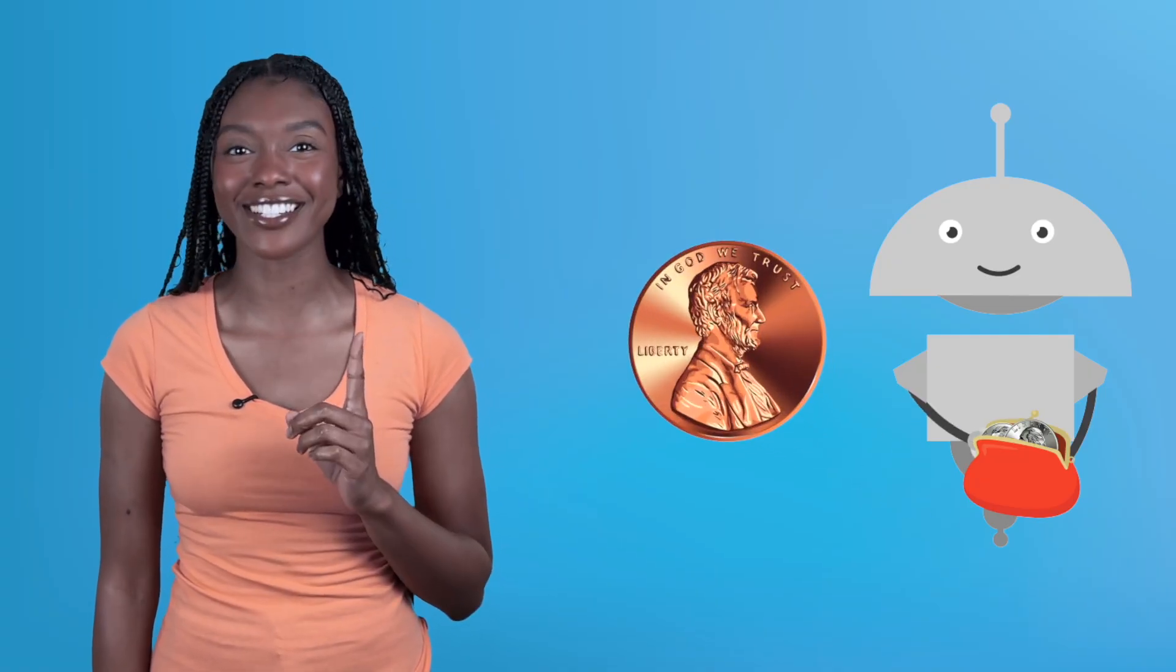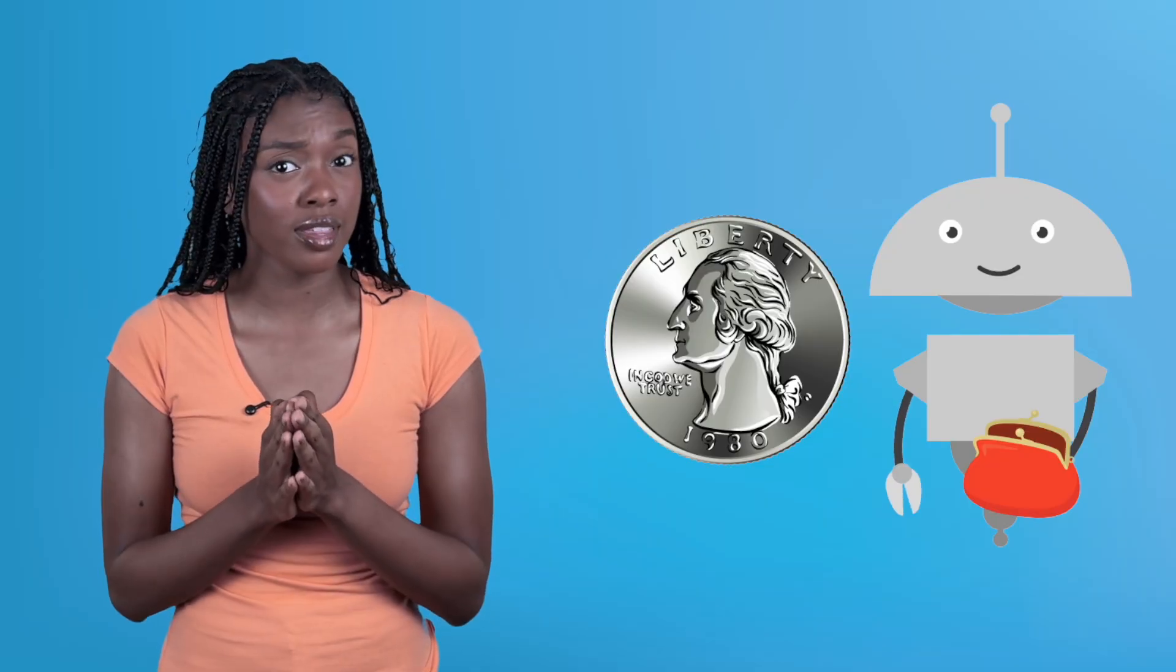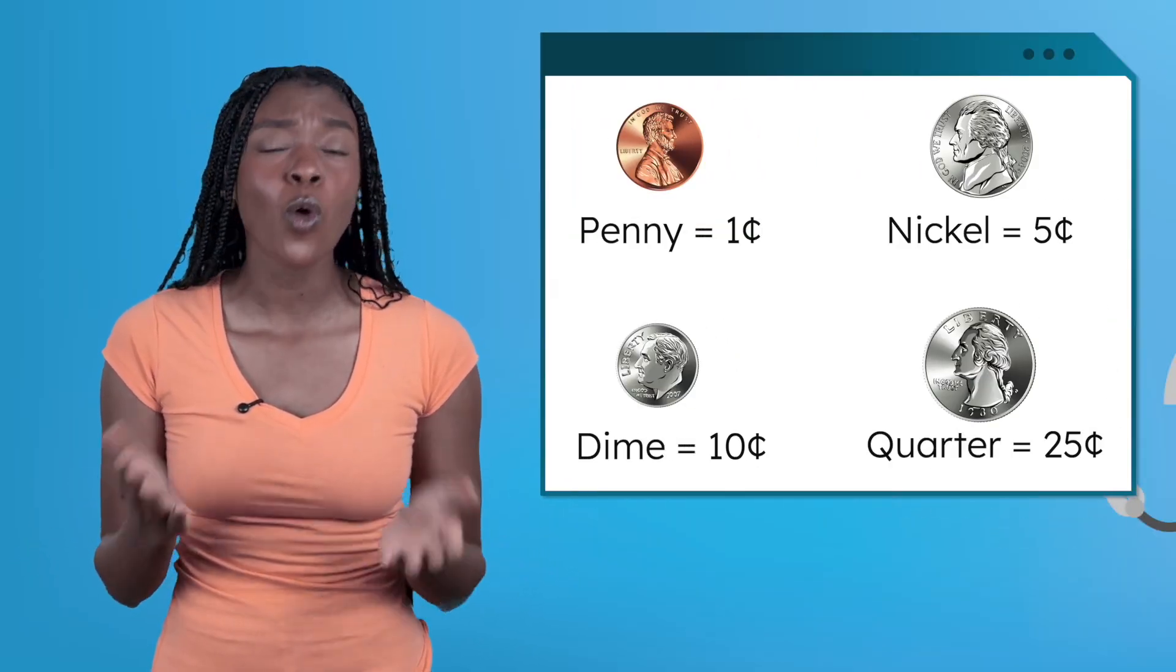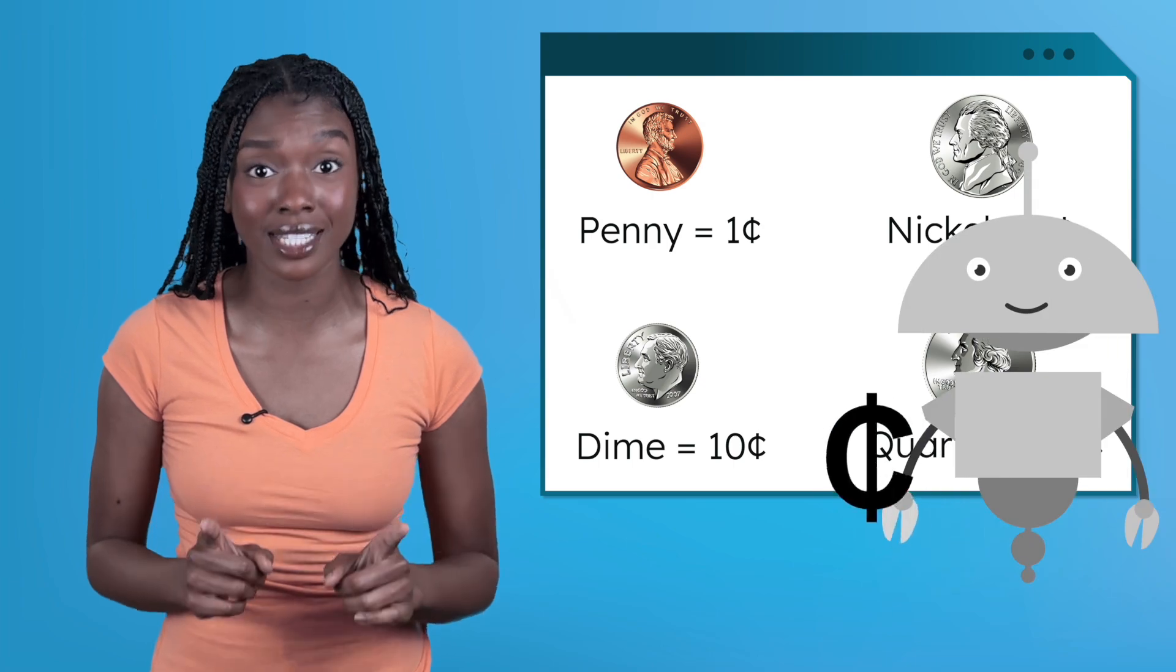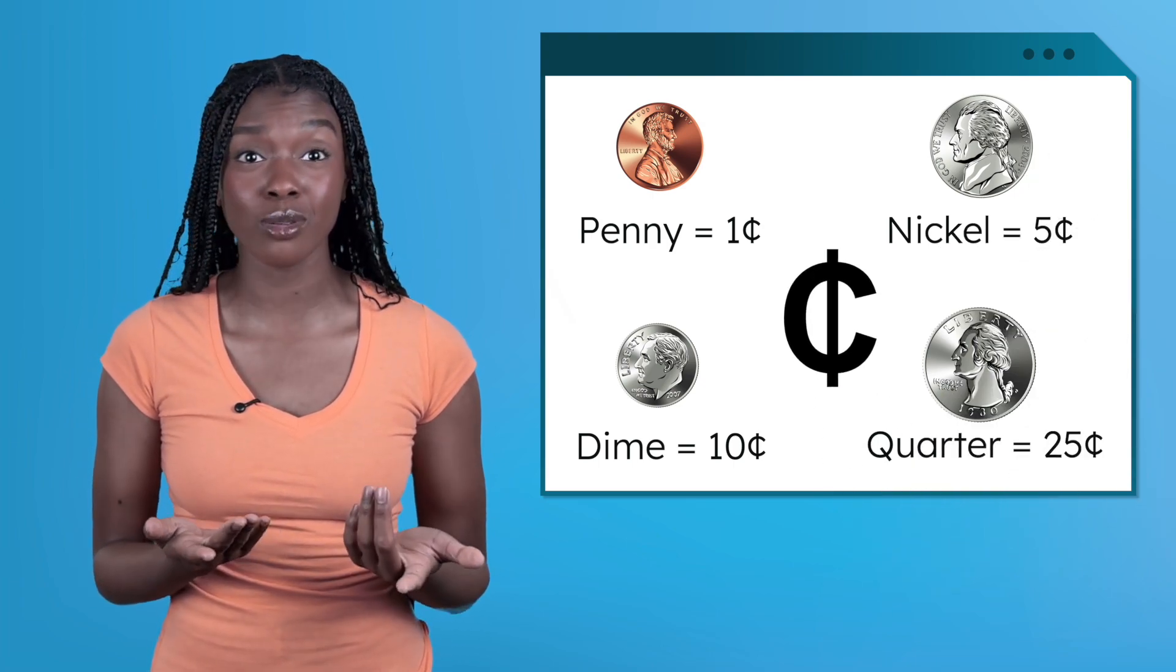Mia is here to help us review the coins we know. Let's say each coin's value: a penny is worth 1 cent, a nickel is worth 5 cents, a dime is worth 10 cents, and a quarter is worth 25 cents.